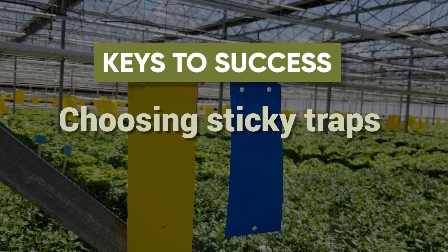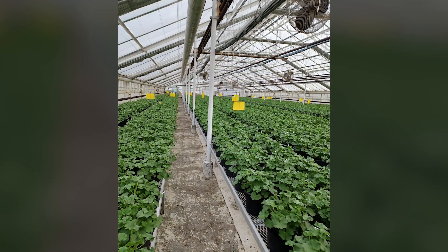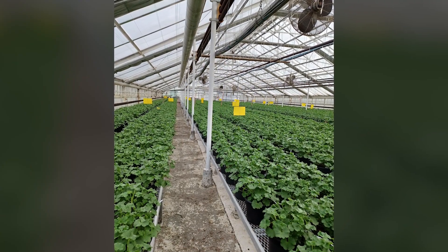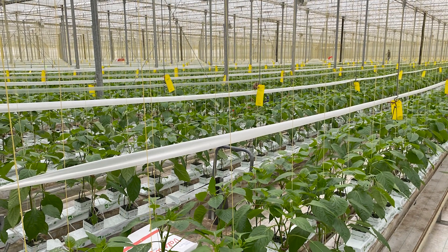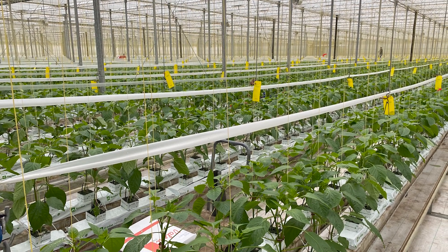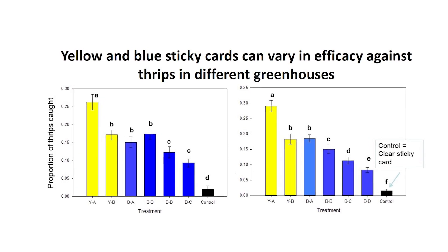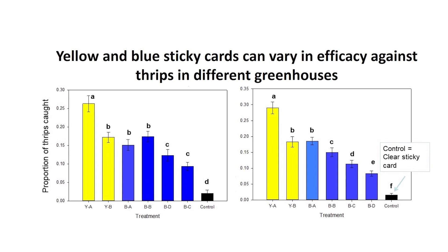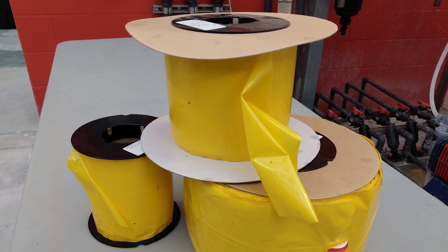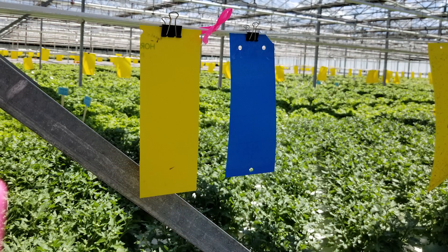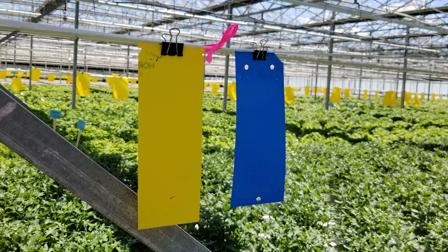Different sticky trap colors and patterns attract different pests, and not all cards or tapes are created equal. With so many options available, how do you choose which is best for you? Large sticky cards are often used for mass trapping in floriculture crops, as they're generally easier to work with than tape, though sticky tape is often more practical for proactive mass trapping in vegetable greenhouses. OMAFRA greenhouse trials have demonstrated that all yellow traps are fairly similar when it comes to catching pests, but shades of blue and their efficacy can vary greatly. Given so many options, it's best to begin a new sticky trap program using yellow, wet-glue sticky traps. If you're interested in learning more about optimizing your current mass trapping program by testing out different colors and patterns, click on the links in the video notes.